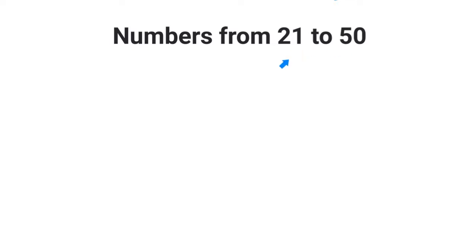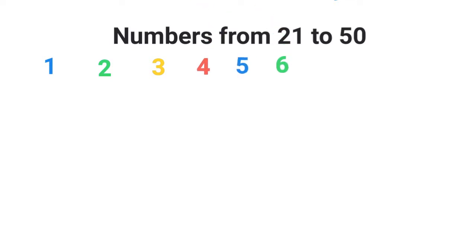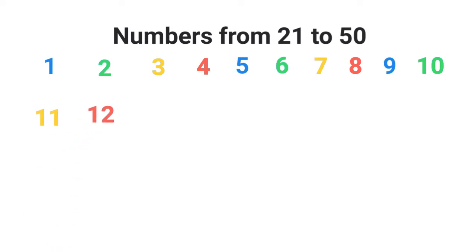But before we begin, let's revise the numbers that come before 21: 1, 2, 3, 4, 5, 6, 7, 8, 9, 10, 11, 12, 13, 14, 15, 16, 17, 18.